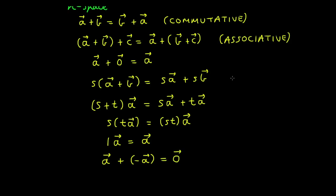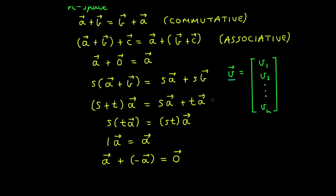Similar to 2-space and 3-space, we can express a vector in n-space using the column matrix of its components: v₁, v₂, up to vₙ. You can also express this vector as a row matrix, so v equals v₁, v₂, and so on up to vₙ.